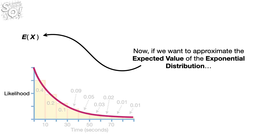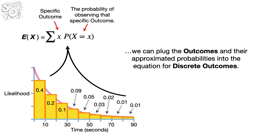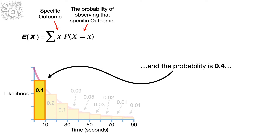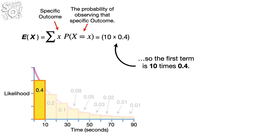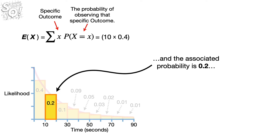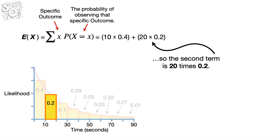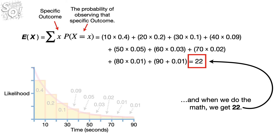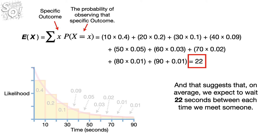Now, if we want to approximate the expected value of the exponential distribution, we plug the outcomes and their approximated probabilities into the equation for discrete outcomes. The first outcome is meeting people in 10 seconds or less with probability 0.4, so the first term is 10 times 0.4. The second outcome ends at 20 seconds with probability 0.2, so the second term is 20 times 0.2. Adding the remaining terms and doing the math gives 22 — suggesting we expect to wait 22 seconds between meeting someone on average.